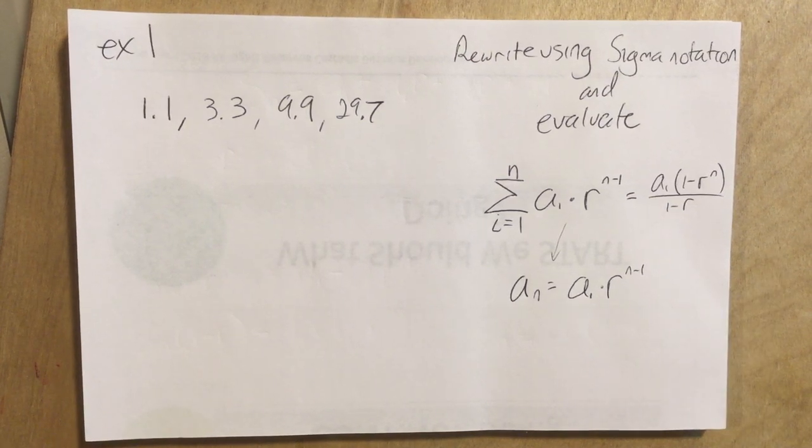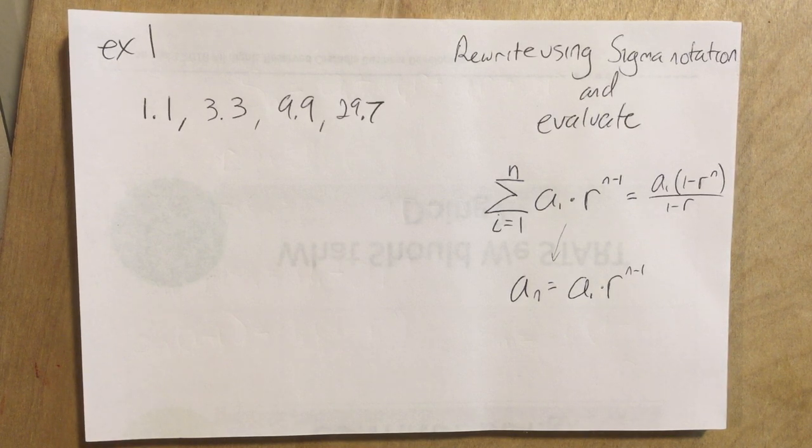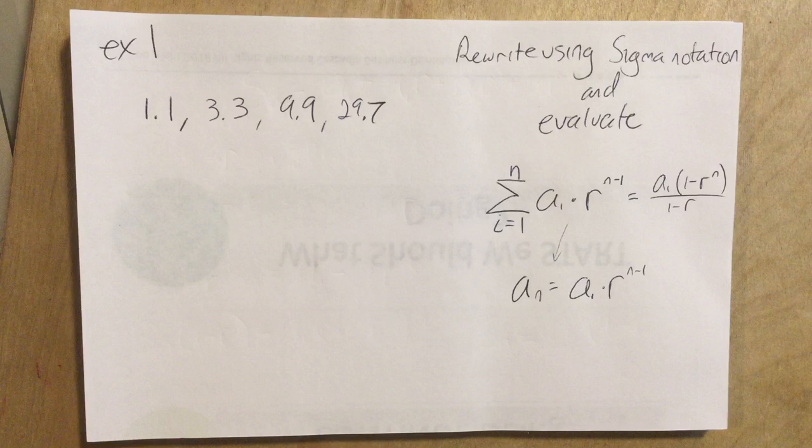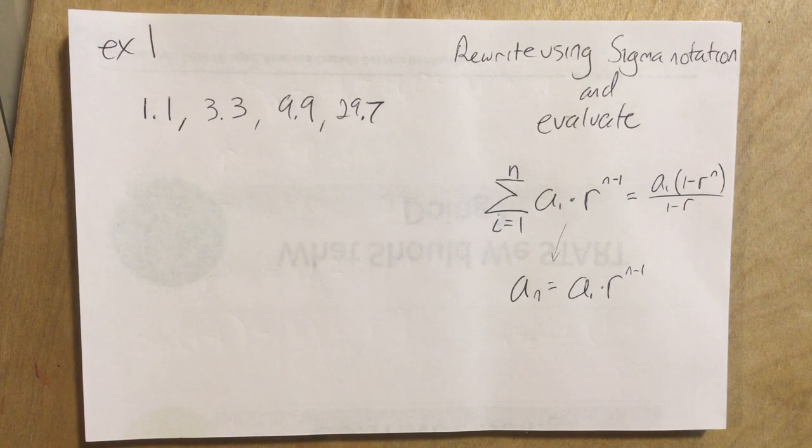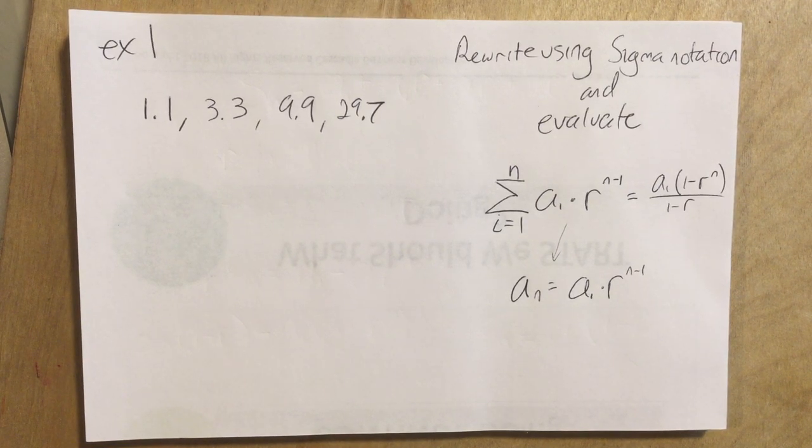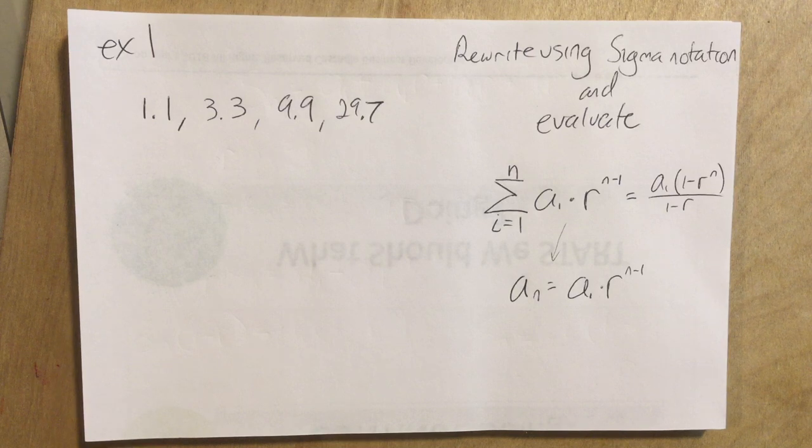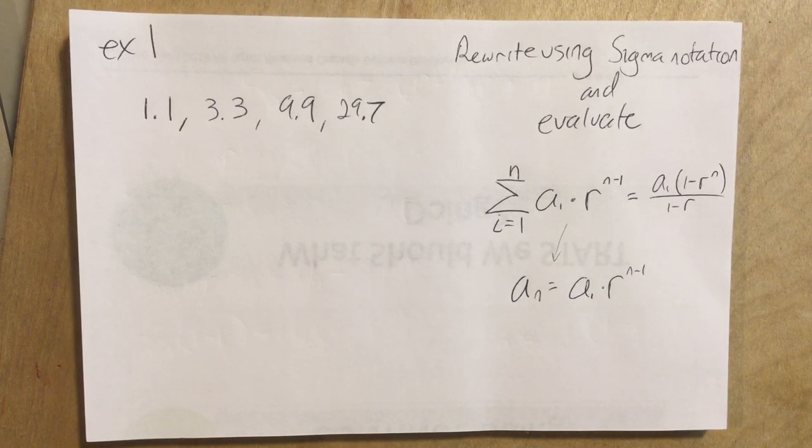All right, so this one example should kind of summarize all the different possibilities we have for the problems on this worksheet, on the geometric sequences, except for 9 through 12. We'll save those for another time. So 1 through 8 should be kind of summed up in this example.